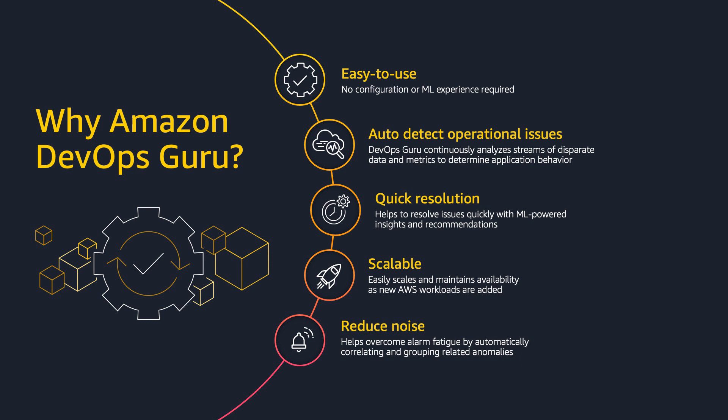DevOps Guru is a fully managed service, which means you don't need machine learning expertise. It uses pre-trained models informed by years of experience from Amazon.com and AWS operational excellence. These models can identify anomalous application behavior, such as increased latency, error rates, and resource constraints, and surface critical issues that could cause potential outages or service disruptions. You don't have to manually configure tons of alarms and thresholds across your AWS resources. With these pre-trained ML models, DevOps Guru implicitly sets thresholds dynamically based on the behavior of the application and alerts you only when those implicit thresholds are breached.